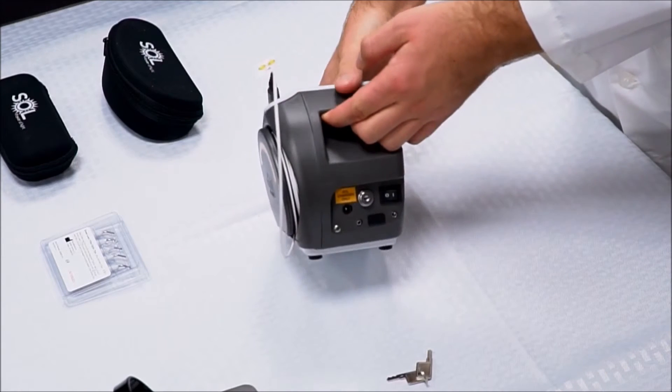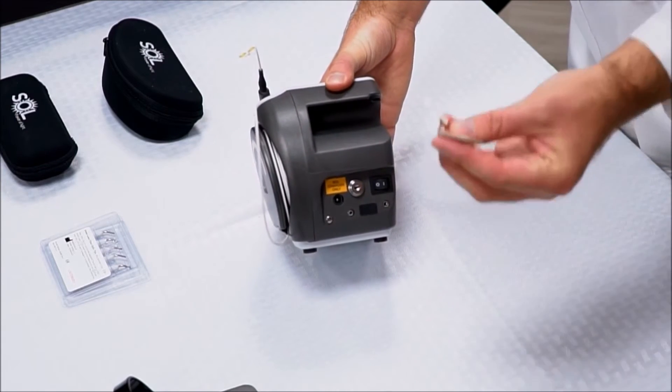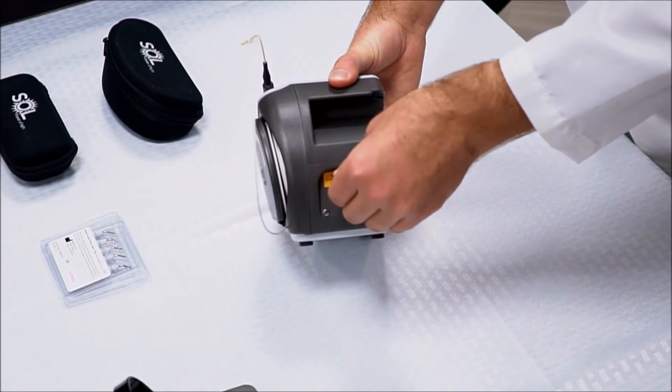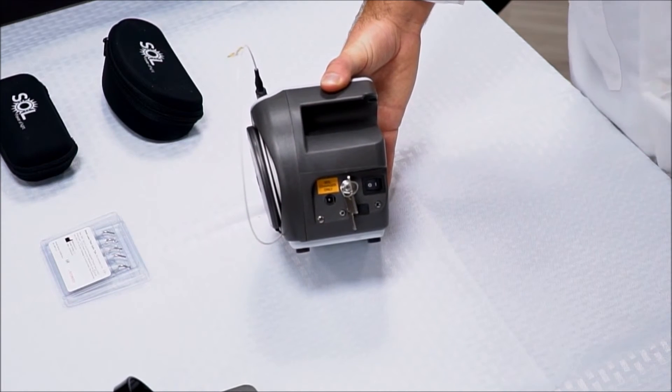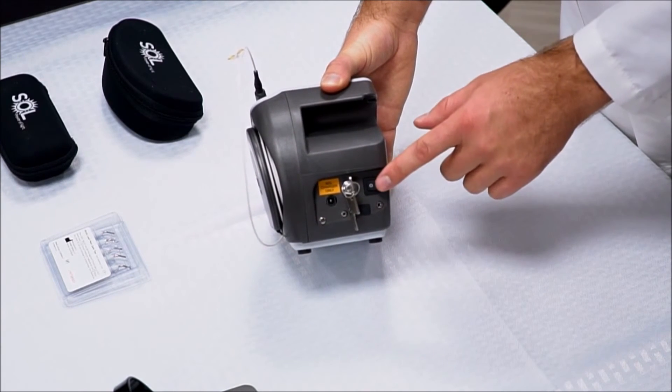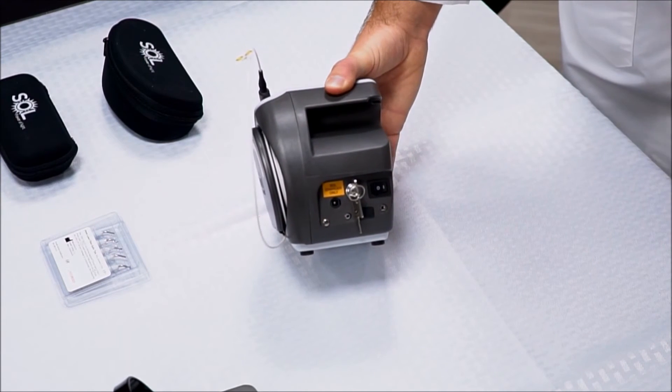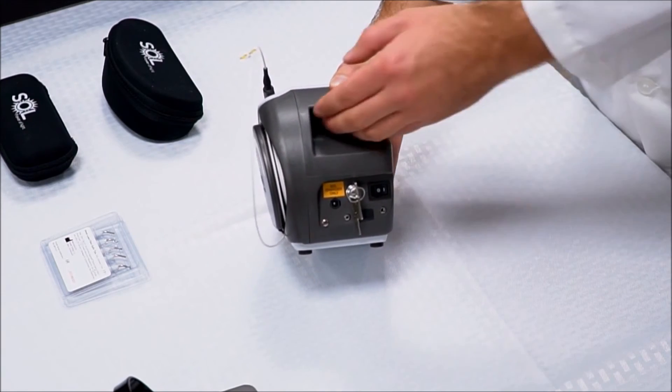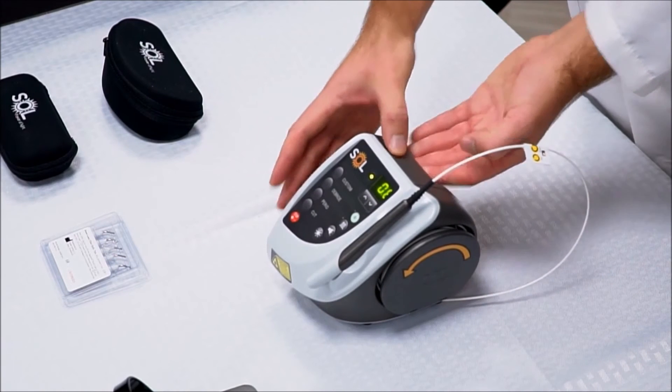To turn it on, look in the back of the unit, take the supplied keys, place them into the key slot here, and twist them on. That unlocks the laser unit. Now, for additional safety, turn on the power button. You should hear an activation beep, and now your laser unit is ready to be used.